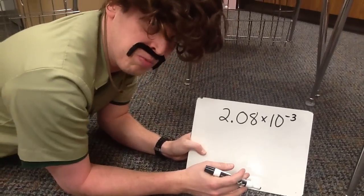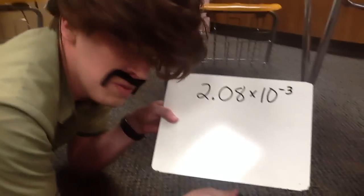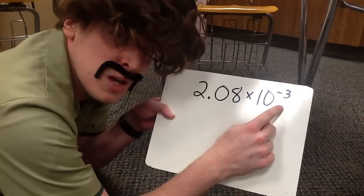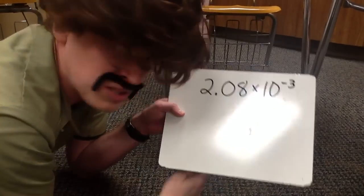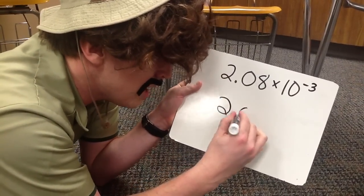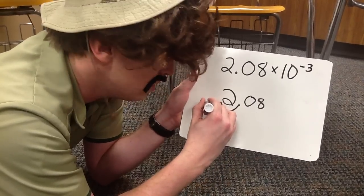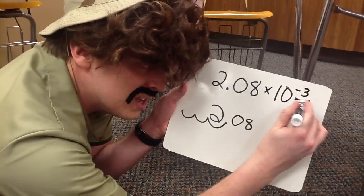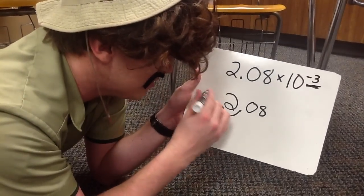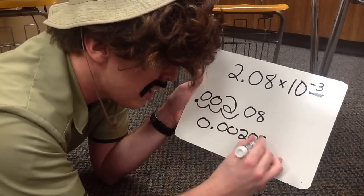Now you might be kind of confused and be thinking, Nigel Mathberry, what is going on with this problem? You might be asking yourself, what's happening with this number right here? Well, because it's negative, we're going to move it to the left this time. We're going to have the same number and we're going to move along from down under. So here we go: 2 and 8 hundredths. This time we're going to move to the left — 1, 2, 3 times — because the little number is negative 3. So right here we have 0, 0, and our number is .00208.